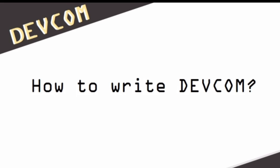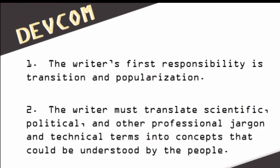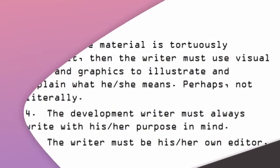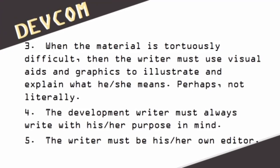How to write DEVCOM? Firstly, the writer's first responsibility is translation and popularization. Second, the writer must translate scientific, political, and other professional jargon and technical terms into concepts that could be understood by the people. Third, when the material is tortuously difficult, the writer must use visual aids and graphics to illustrate and explain what he or she means, perhaps not literally. Fourth, the development writer must always write with his or her purpose in mind. And lastly, the writer must be his or her own editor.